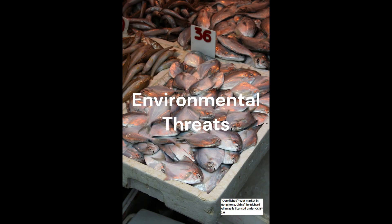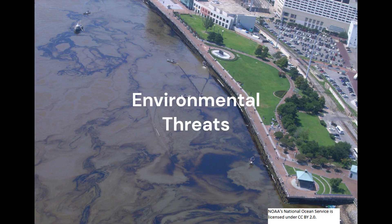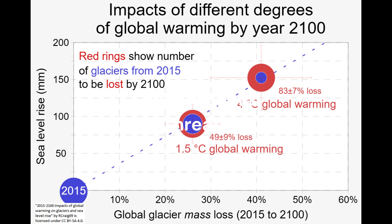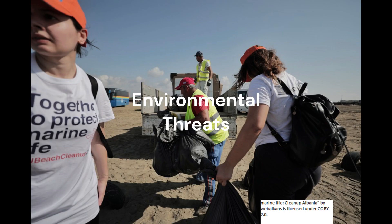Marine biomes face several environmental threats, both natural and human-induced. Some examples are overfishing, pollution, and climate change. To protect marine biomes, several actions can be taken, including sustainable fishing practices, pollution prevention, and climate change mitigation.